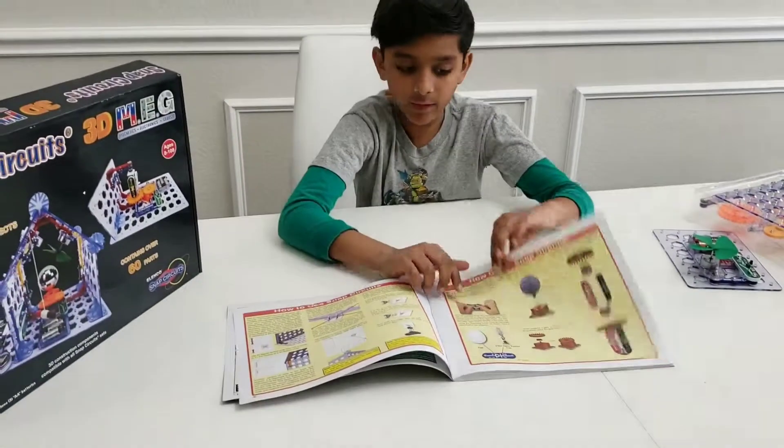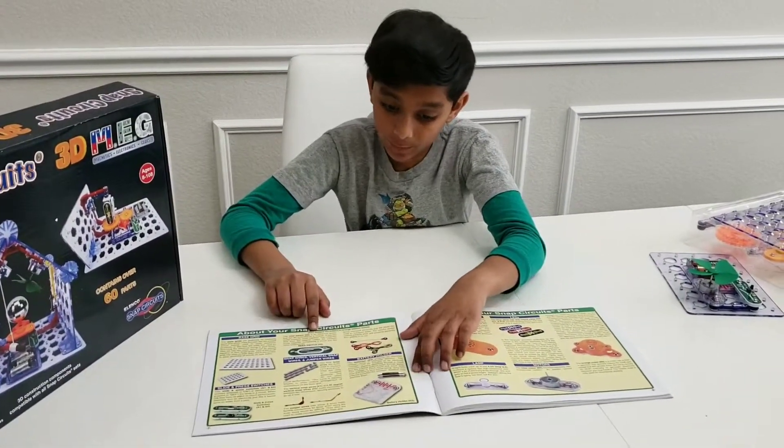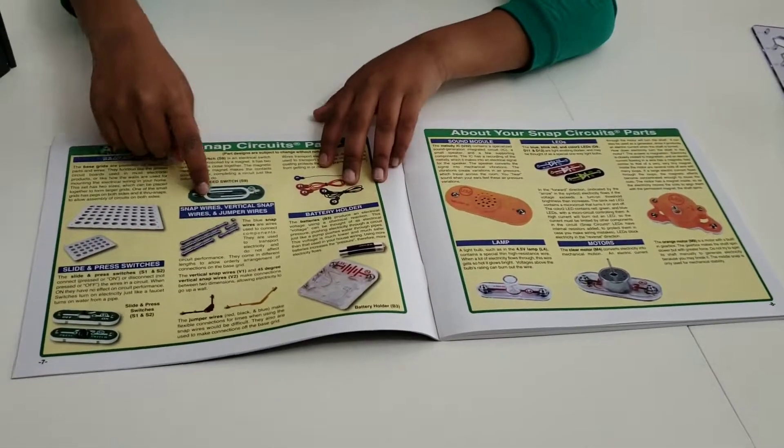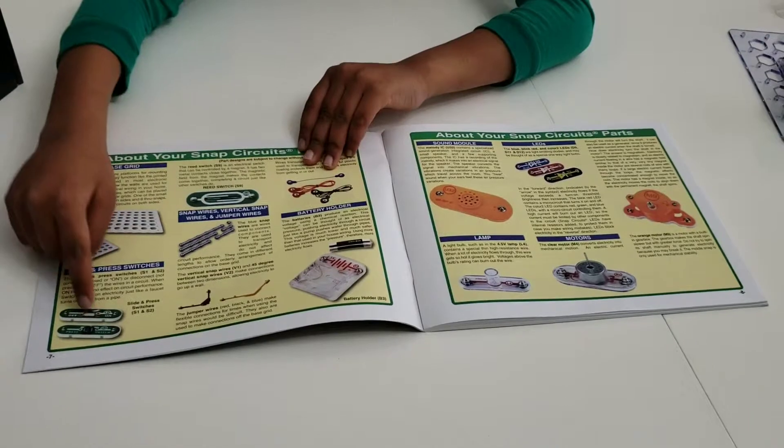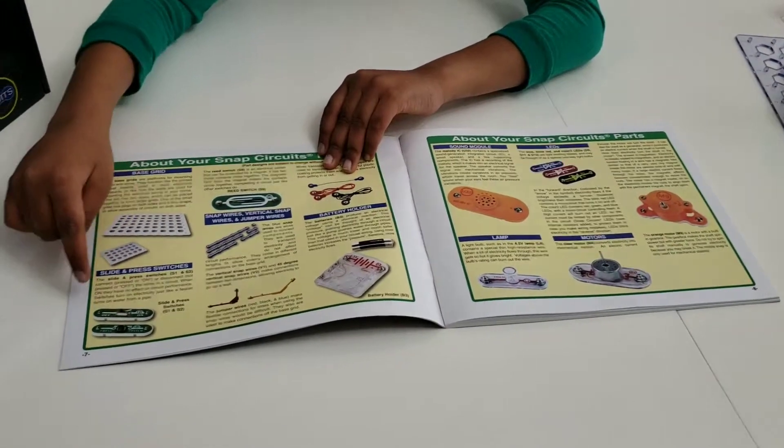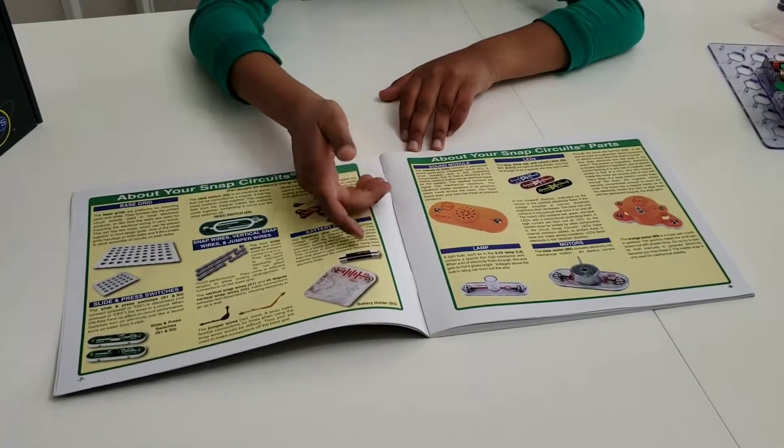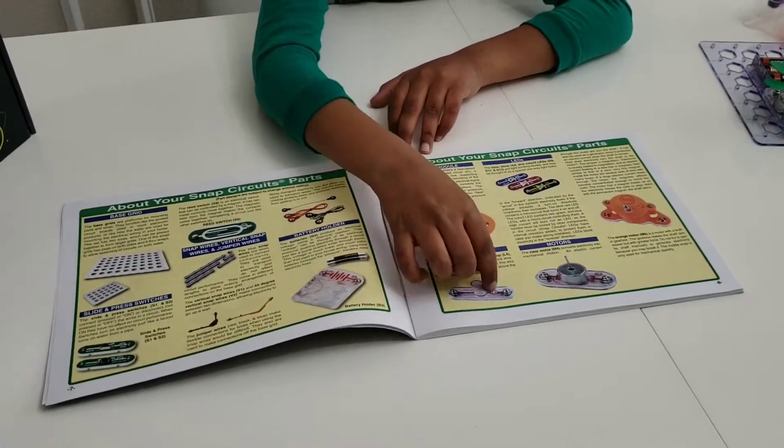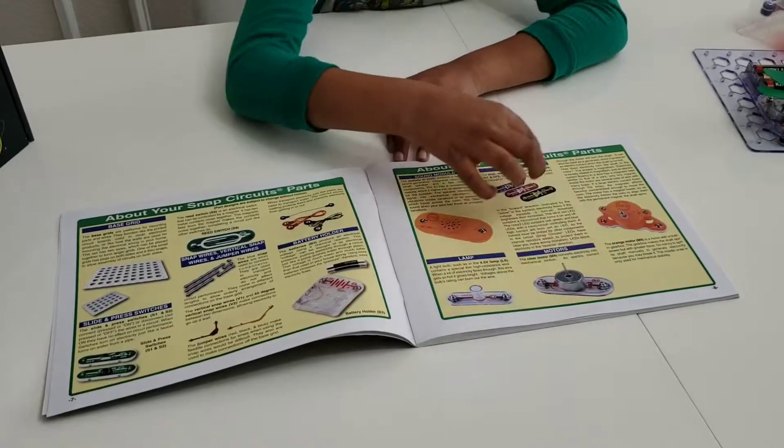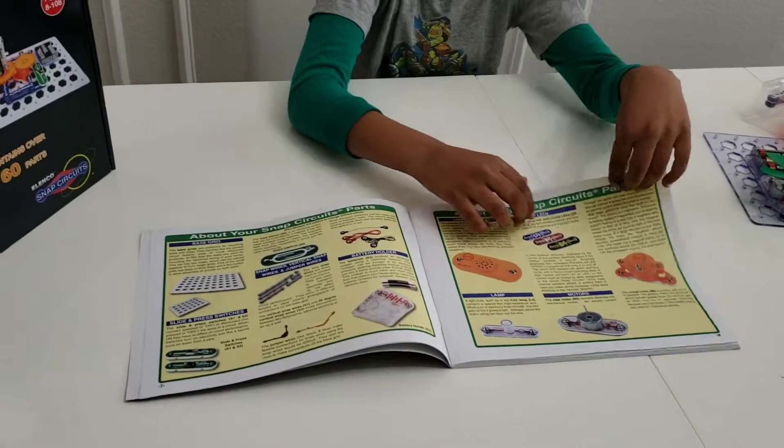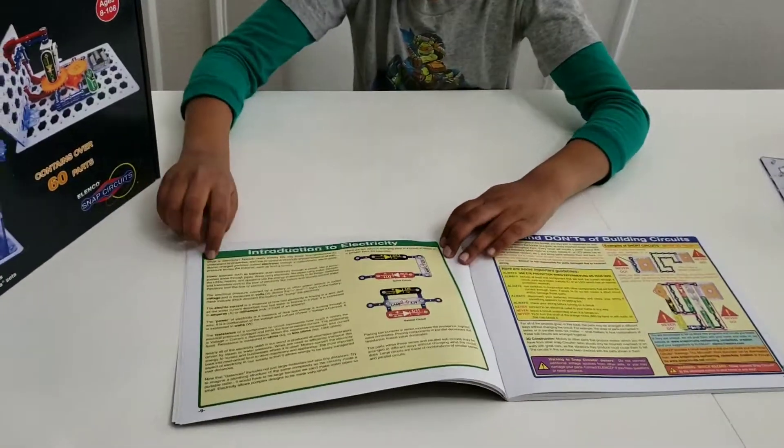and then here it shows about the different electronics like the wires, these different types of switches, the on and off switch, the button, the base grids, then it shows the different types of pieces, like the sound module, the lamp, the motor, the LED lights, and a bunch of these pieces.